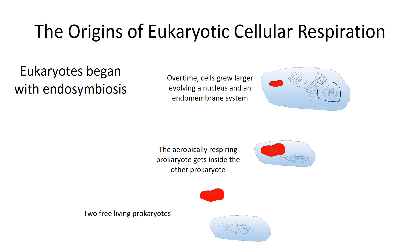As they grew larger and more complex, they would eventually go on to form multicellular organisms. And to this day, only eukaryotes have evolved into multicellular organisms — there are no multicellular prokaryotes. So the question is: why did aerobic respiration allow cells to become larger and more complex, and why did it evolve into multicellular organisms?